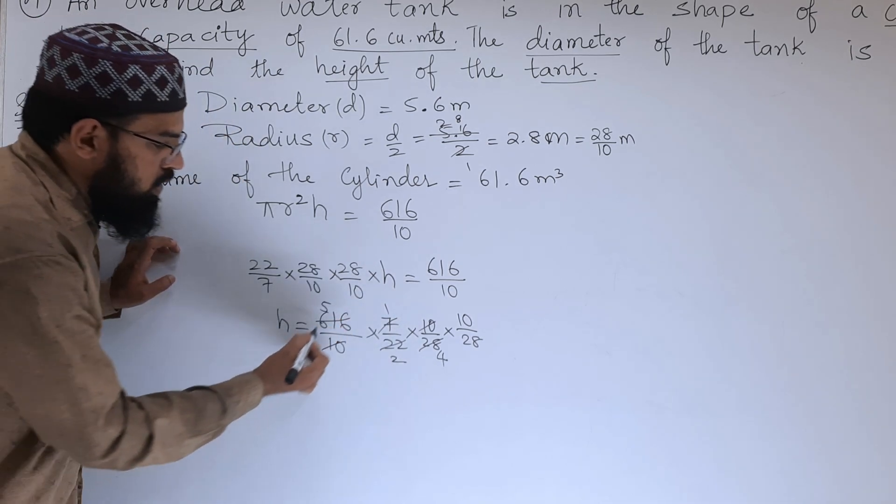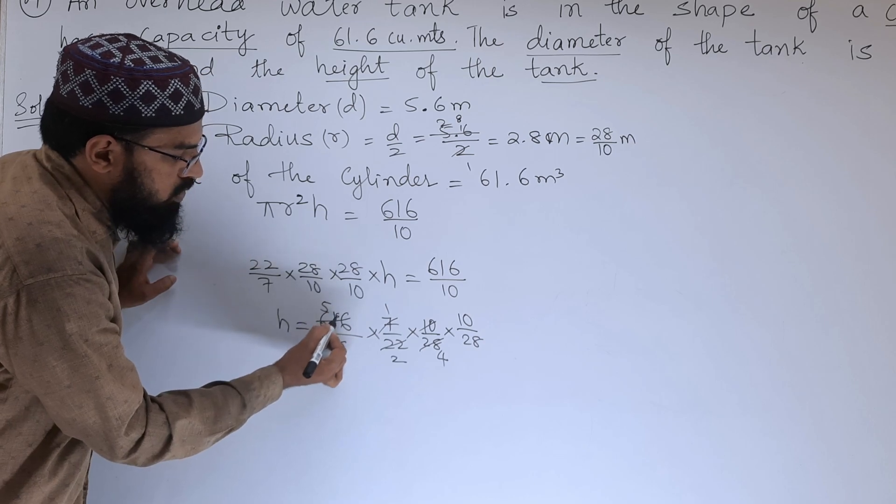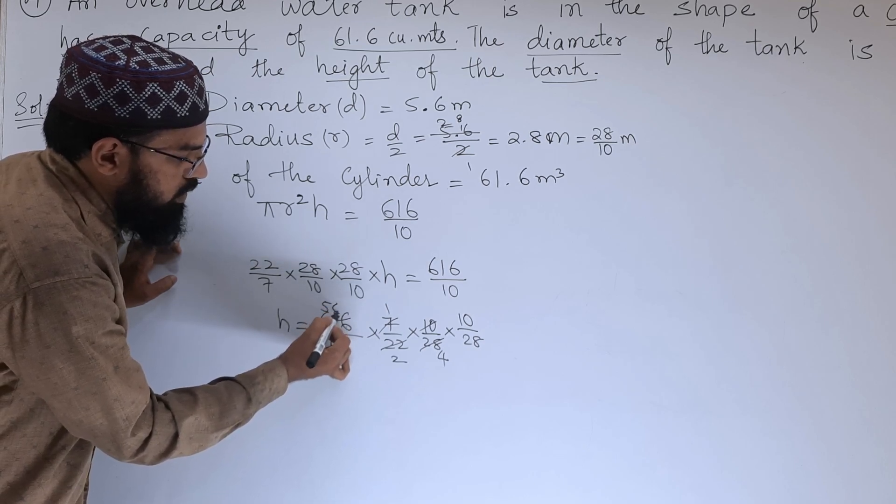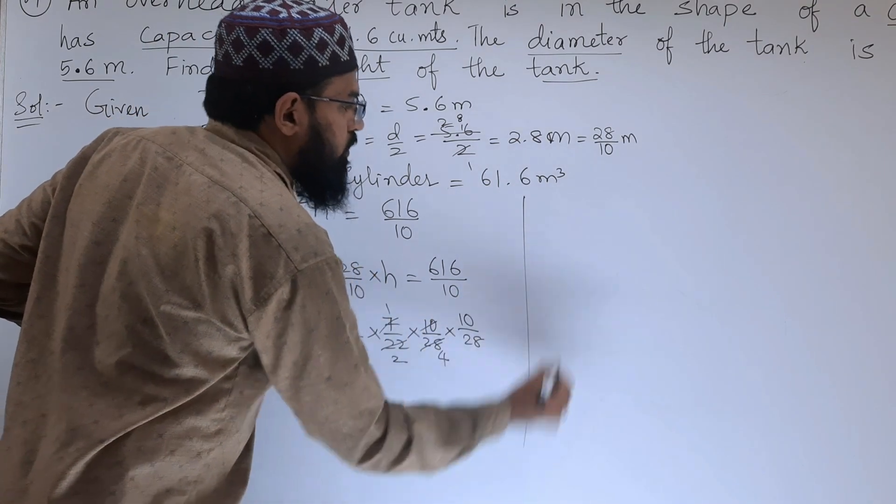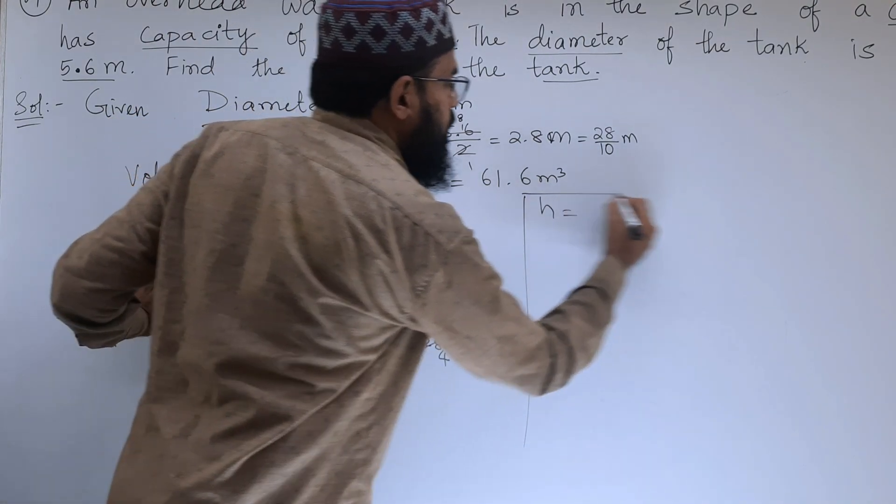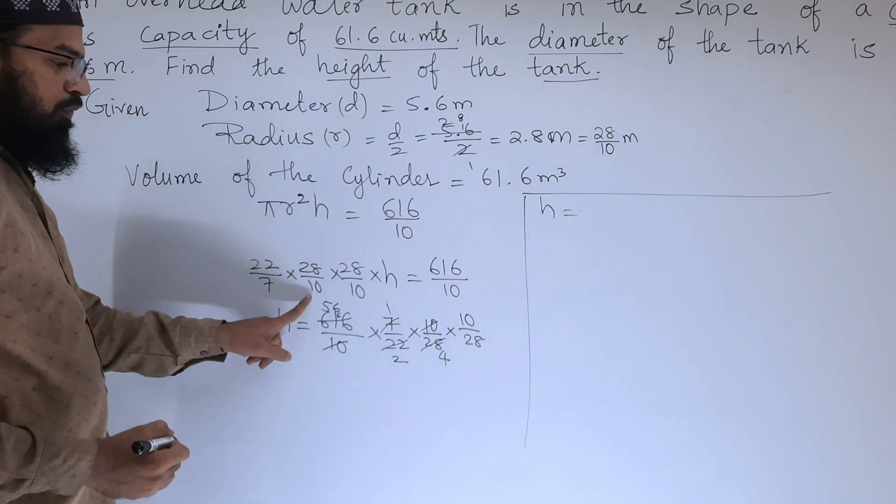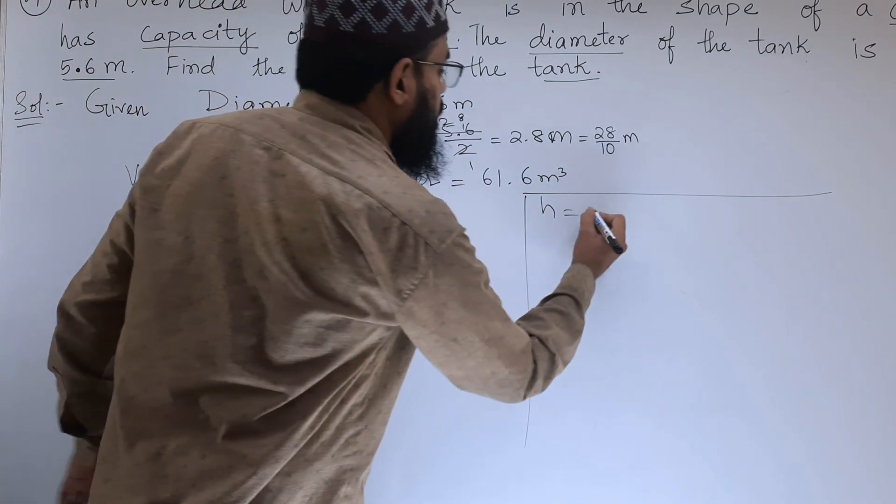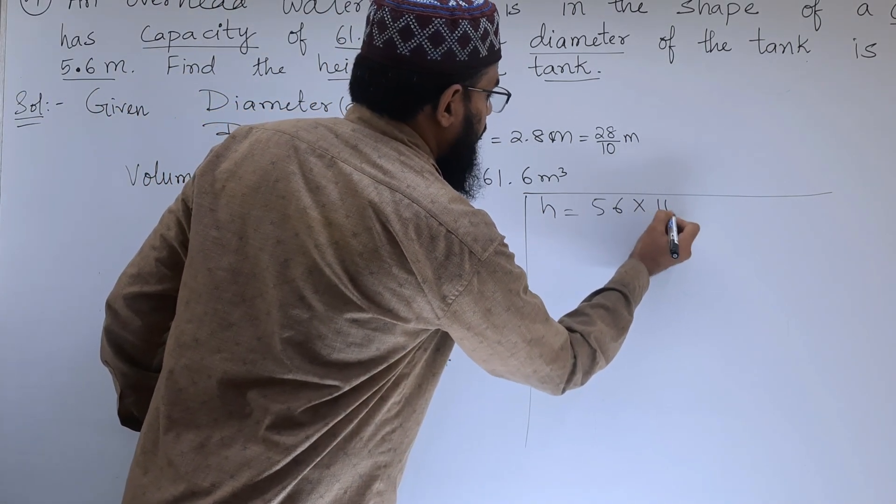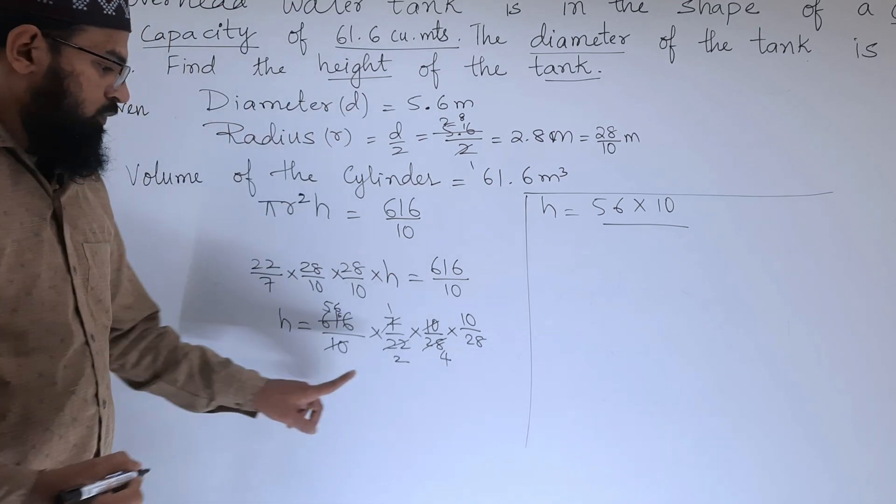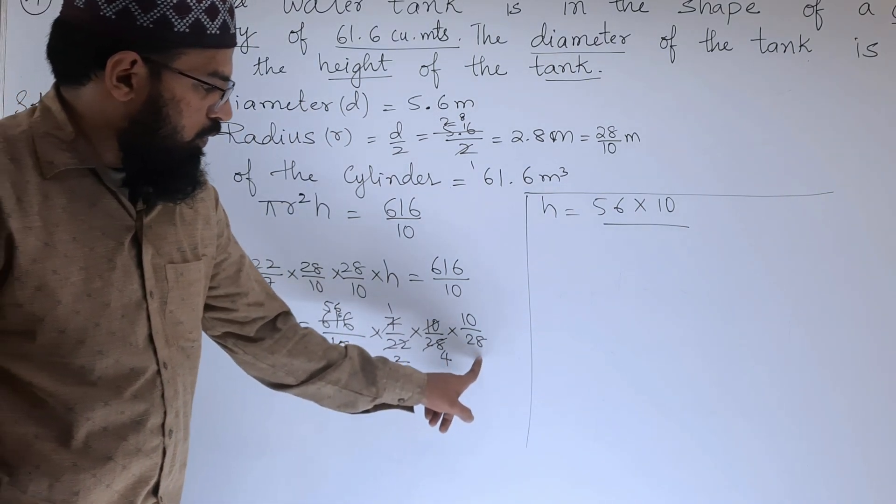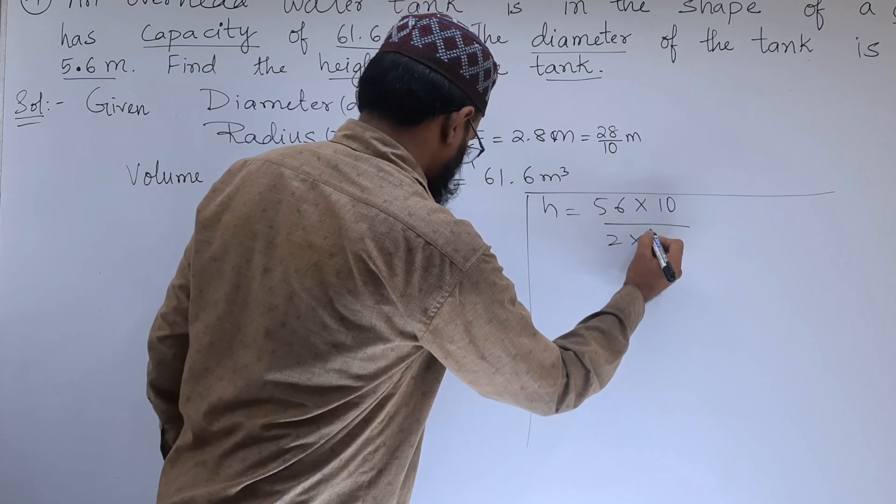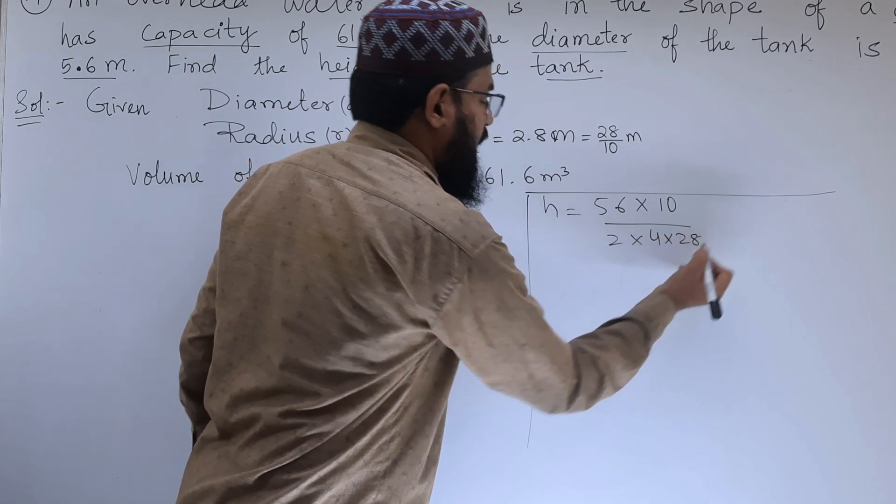Simplifying: 28 by 28, we have got h equals 56 into 10 by 2 into 4 into 28.